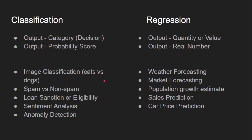For all classification cases, the output will be a probability score indicating that particular event. For example, in the loan eligibility case, the output will be the probability score of getting a loan. For regression problems, the output will be a quantity or a value — we expect a real number from the neural network. These are mostly forecasting, predicting, or trend analysis problems.